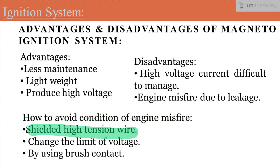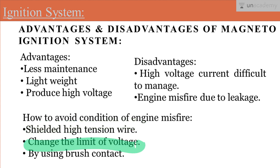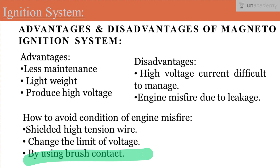The first solution is that the high tension wire should be properly shielded — a shielded high tension wire should be used during the process. The second solution is using low tension, or changing the voltage limit in the secondary winding. The third solution is that the distributor should be replaced with a brush contact.